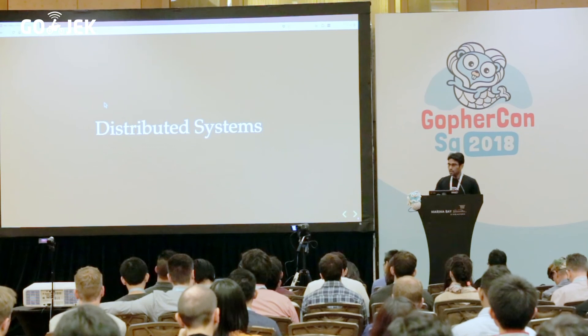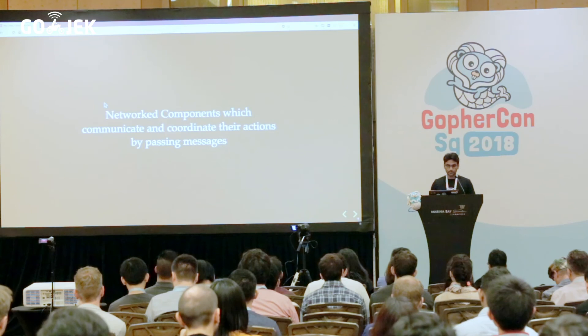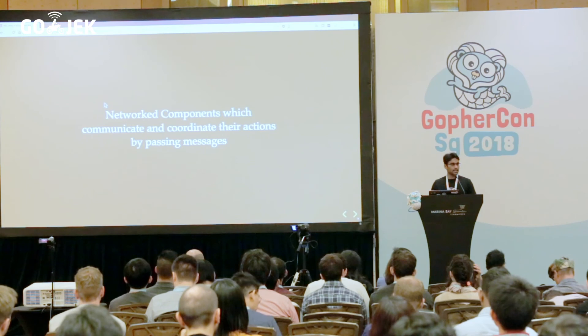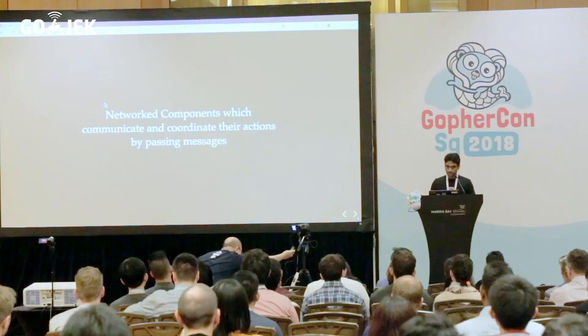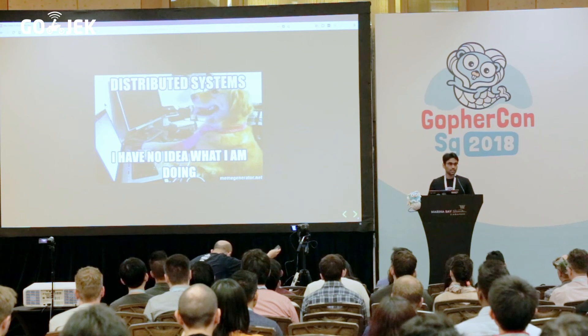Let's start with what distributed systems are, because we are talking about it. Distributed systems are network components which communicate and coordinate their actions by passing messages. In a complex microservices architecture, there are multiple pieces which basically interact with each other to achieve a common goal — those are distributed systems.